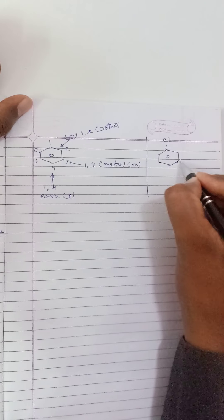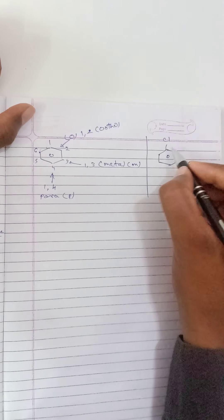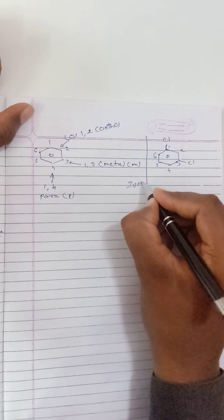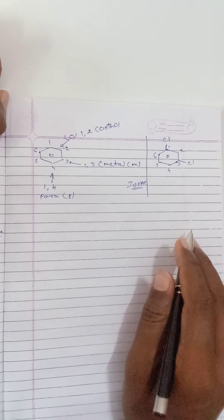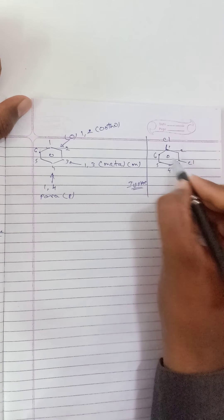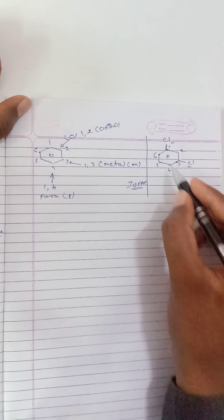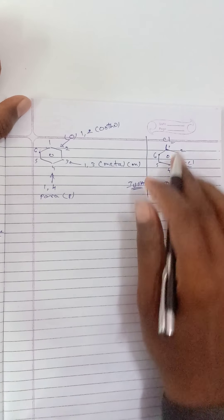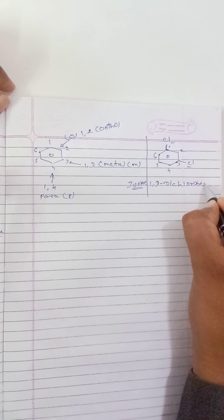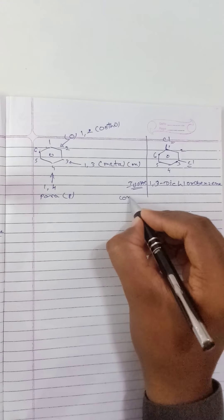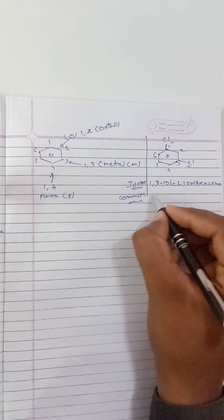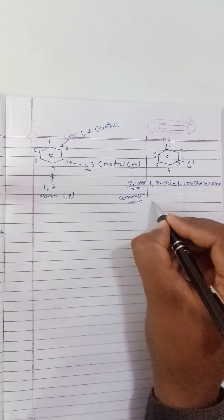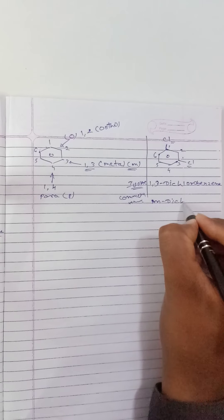Example: a benzene ring with two chlorine atoms. Numbering one through six — the two chlorine atoms are at positions one and three. For IUPAC nomenclature, we write the position numbers: 1,3-dichloro. Since it is the 1,3-position, the common name is meta-dichlorobenzene.